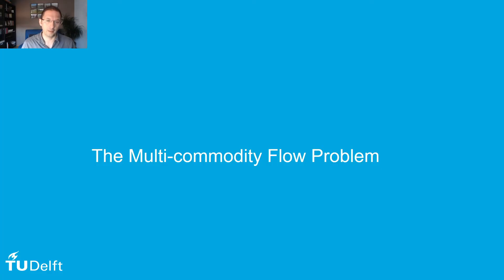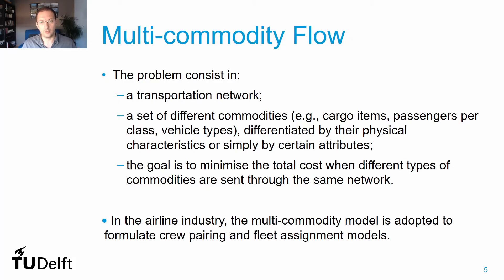Let's start studying the Multicommodity Flow problem. It consists of a transportation network to transport different commodities - these could be cargo items, passengers with different fare classes, vehicle types, or messages in an information network. These commodities have different characteristics or attributes like origin and destination. The goal is to minimize total costs when transporting all commodities.